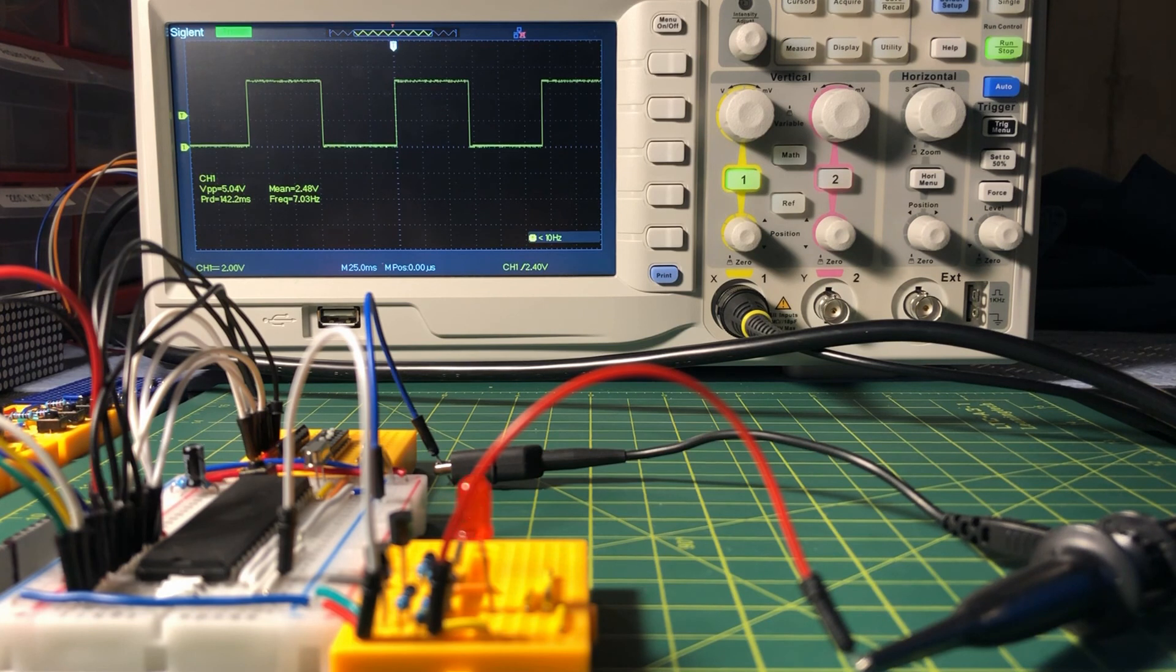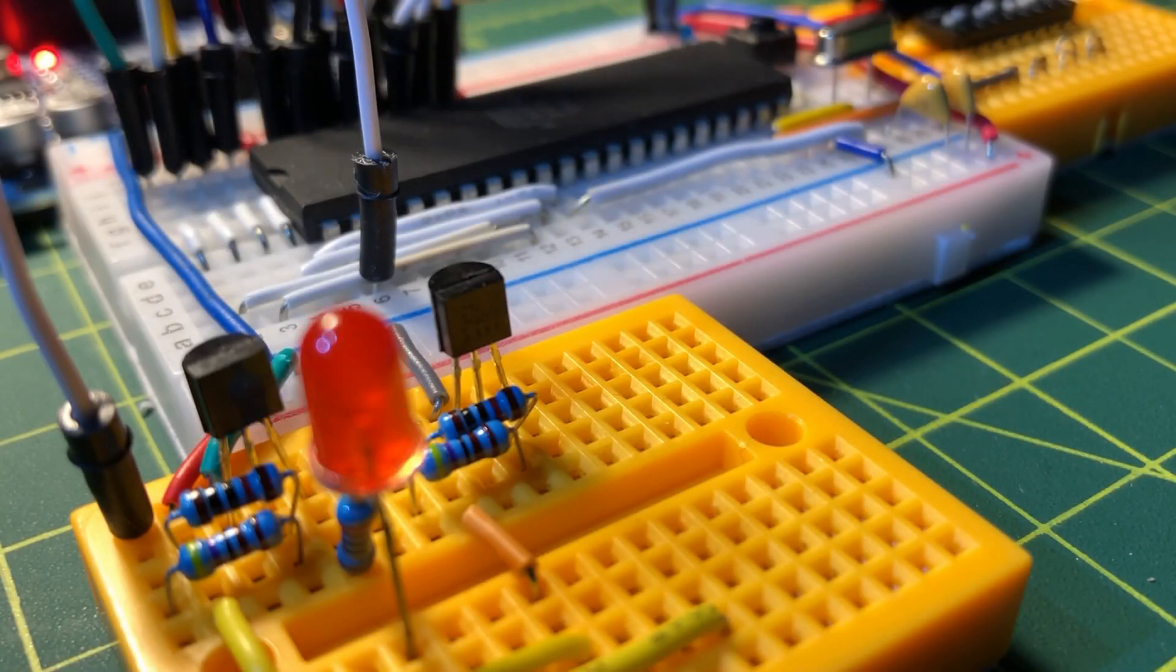In this demonstration, we have a square wave running at the lowest possible frequency which is approximately 7 Hz. The maximum frequency we can get is approximately 30 kHz.